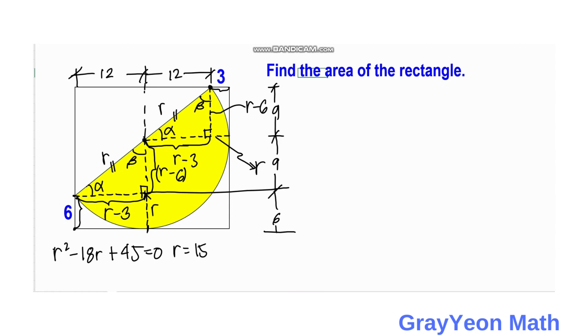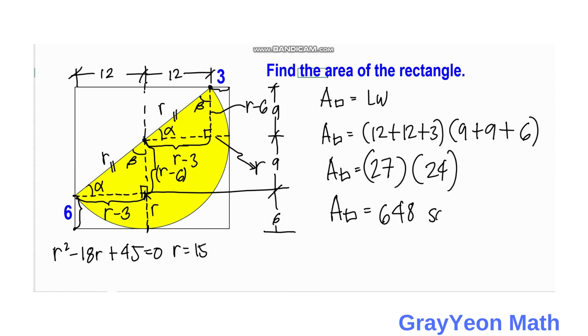And we are now ready to find the area of the rectangle. So for the area of the rectangle, it is just equal to length times the width. So area of the rectangle is equal to the length which is 12 plus 12 plus 3, times the width which is 9 plus 9 plus 6. Then if we simplify this we have 24 plus 3, then we have 27, times 9 plus 9 is 18 plus 6, and that is 24. So the area of the rectangle is actually 24 times 27 and that would be 648 square units. And that is our answer.